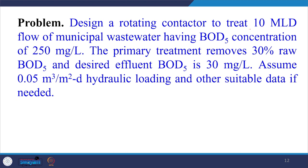Let us solve a problem. We have to design a rotating contactor to treat 10 MLD of municipal wastewater having BOD5 concentration of 250 mg/L. With primary treatment, 30% of the BOD5 is removed; the rest must be removed in the rotating biological disc contactor. The desired effluent quality is 30 mg/L, meaning we have to reduce the BOD5 to 30 mg/L.